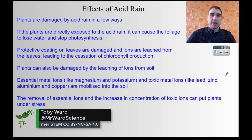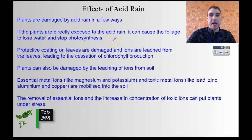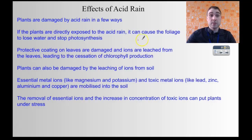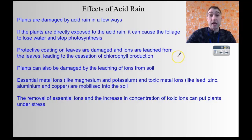You need to also be able to talk about the effects of acid rain. Plants are damaged in a few ways. The leaves, if you spray acid on the leaves, they get damaged and that reduces the ability of the plant to do photosynthesis. Damaging the leaves also damages the coating on the leaves, and that leads to ions being leached from the leaves, again reducing the ability of the plant to do photosynthesis.